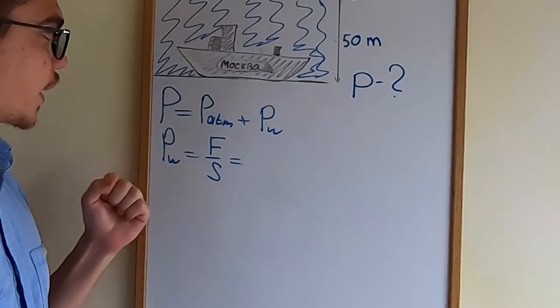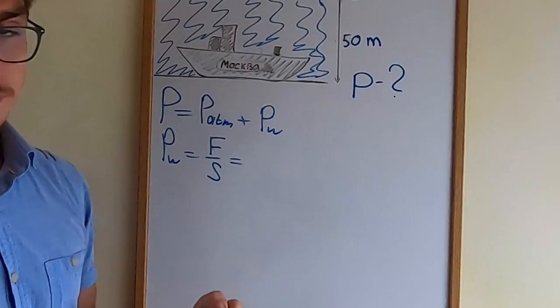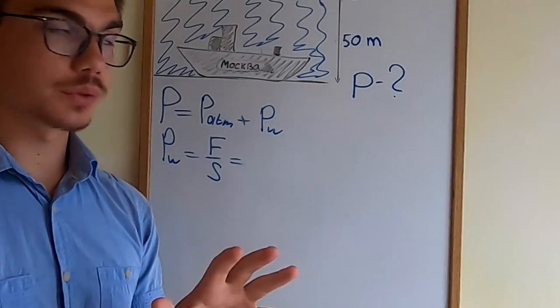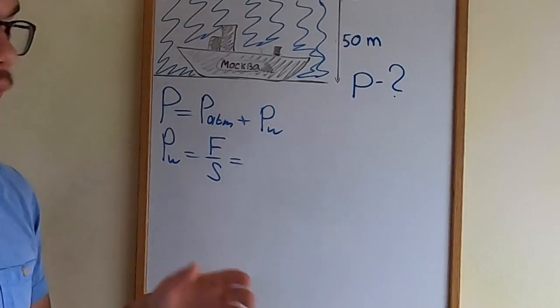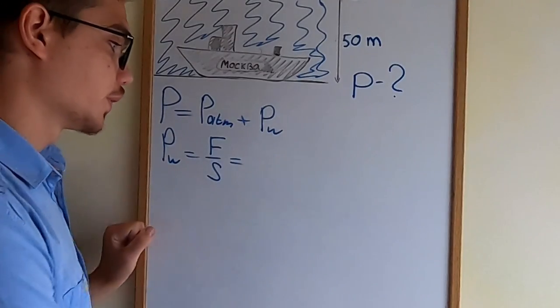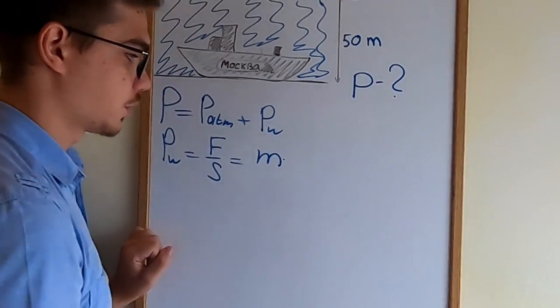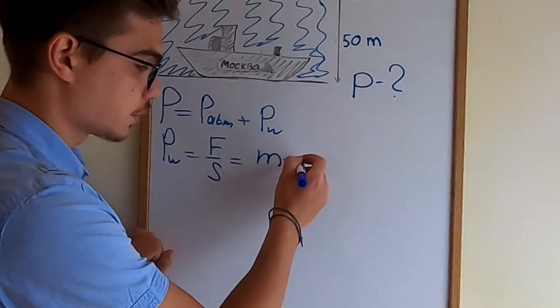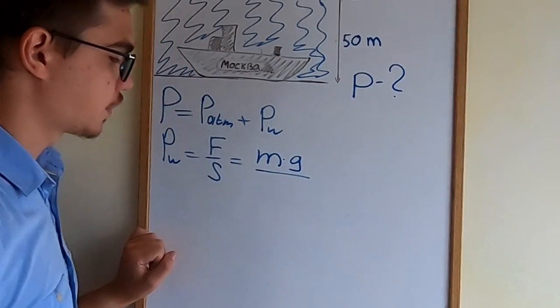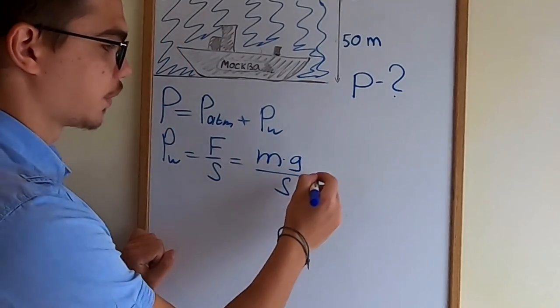So what force acts on the ship? Well this is just the weight of the water above the ship. And what is the weight of the water above the ship? Well it is the mass of the water times the acceleration which is g, and all of this divided by the area.